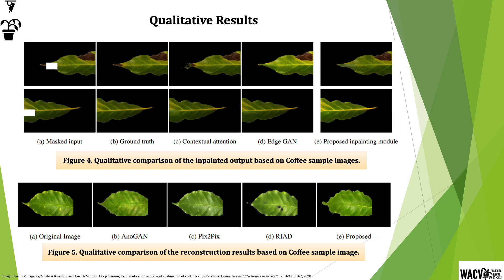It is evident that AnoGEN results in smooth leaf textures and fails to replicate the leaf shape. This results in the leaf contour being falsely misclassified as disease regions.